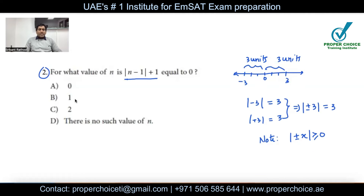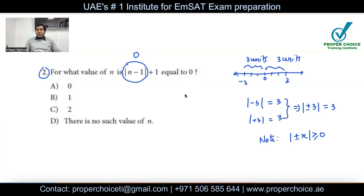Rather than selecting any value for n ourselves, let's try substituting from the given options. As I mentioned, the minimum value of |n − 1| is 0. Even if we take that minimum, 0 + 1 can never equal 0. So there is no such value for n, and I should go with option D. But if you're unsure, you can substitute n = 0, 1, and 2 to check.